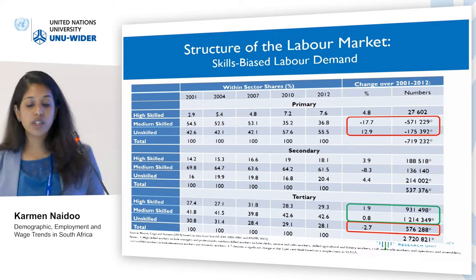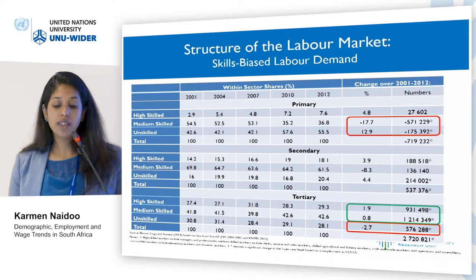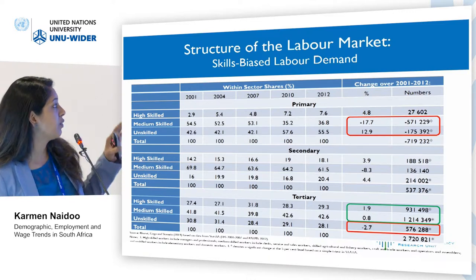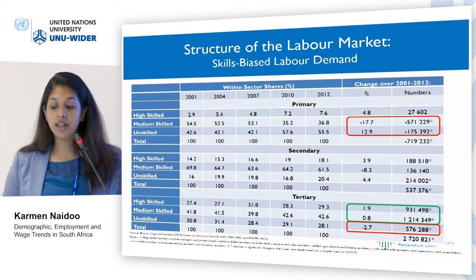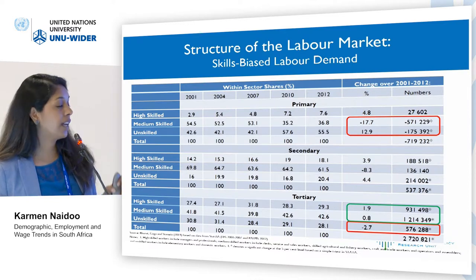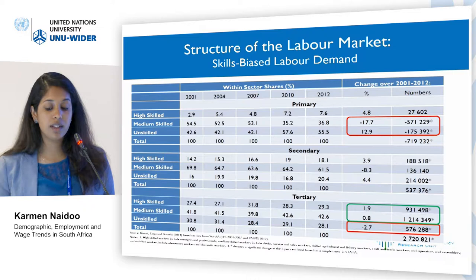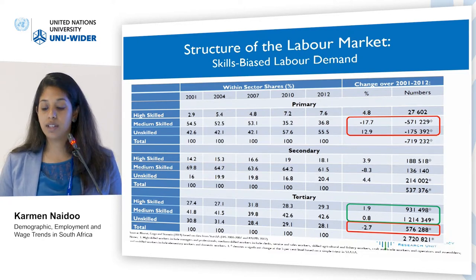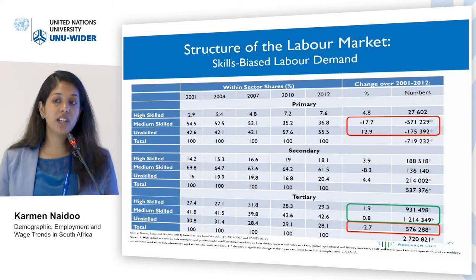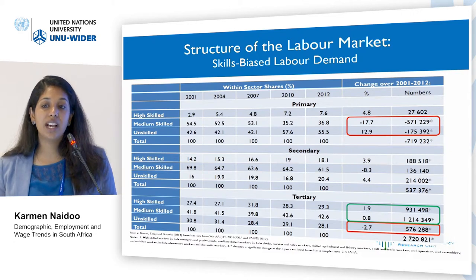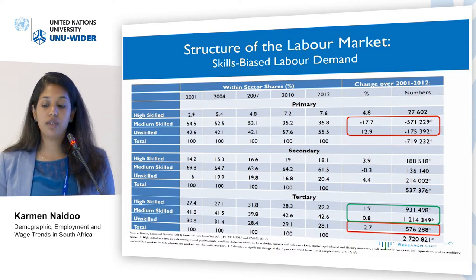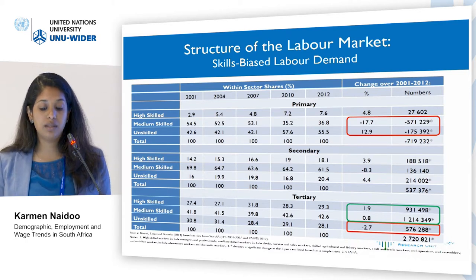The third important trend is skills-biased labor demand, which fits well with the sectoral shifts. Disaggregating sectoral employment by skill type, job losses in the primary sector are concentrated in low- and medium-skilled occupations, while employment generated in the tertiary sector is more in high- and medium-skilled occupations. This is particularly concerning given South Africa's highly unequal education system — a legacy of apartheid — where a large proportion of high school graduates may not have an adequate quality of education.